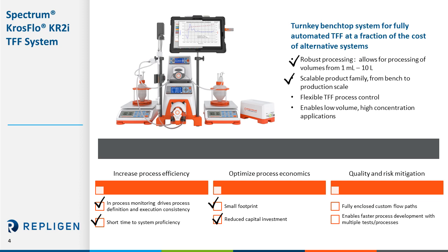The KR2i does not have a fixed flow path but rather can be used with configurable flow paths, driving enhanced flexibility. The KR2i can also be used with our closed custom flow paths, which reduce contamination risks. Taken together, the automation and data logging enables more efficient process development work, and the system enables optimal process economics with a small footprint at a fraction of the cost of alternative systems.